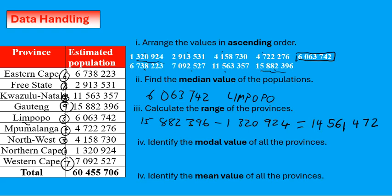Next question: identify the modal value. Modal is another word for mode, and mode rhymes with most, so we're looking for the value that appears the most. Looking at the table, there is no mode — all values appear only once. If a value appeared twice more than others, that would be the mode, but we have no mode in this case.